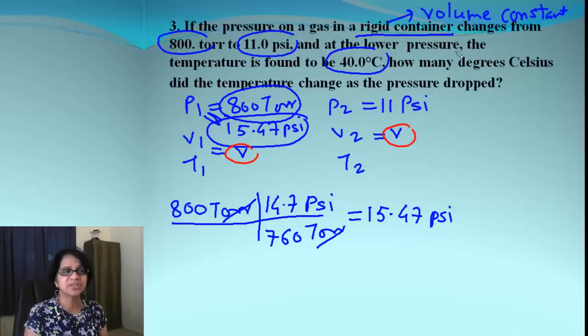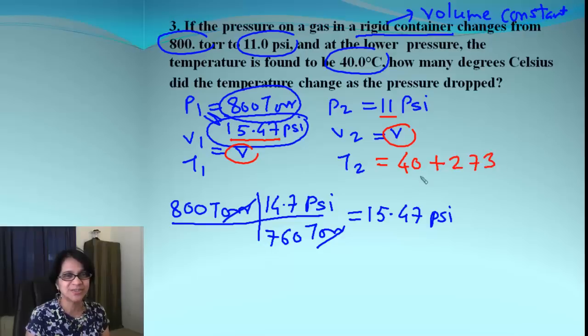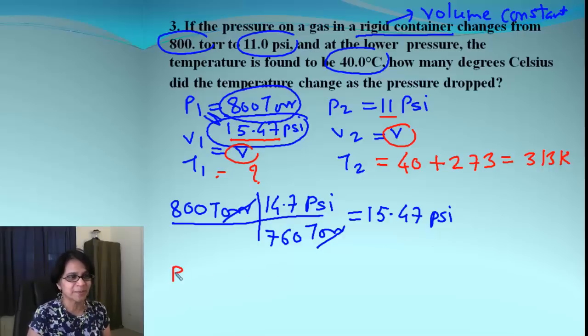And now what does it say about temperature? It says at the lower pressure, the temperature is 40 degrees. Out of 11 and 15.47, the lower is 11. So at 11, the temperature is found to be 40 degrees. Again, keep in mind that's Celsius. So it will be plus 273 to get to Kelvin, which is 313 Kelvin. We need to find out the temperature first. And then we need to find out how much temperature is going to drop from the value which we are getting, 313 Kelvin. So let's write down the equation.